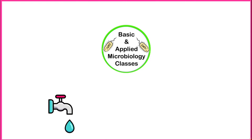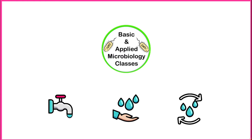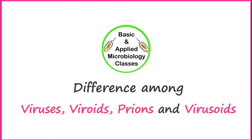Hello everyone, welcome back. In this video we are going to cover the differences among viruses, viroids, prions, and virusoids. Before we start, you should know that all these are very good examples of acellular biological agents, meaning they don't have a true cellular structure.